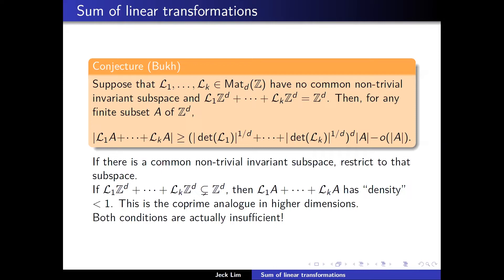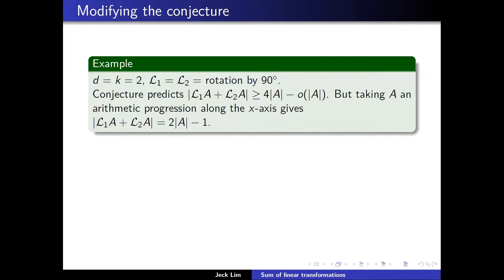It turns out that both conditions are actually insufficient. For the first example, consider L_1 and L_2 to both be rotation by 90 degrees. Each has no non-trivial invariant subspace, and together they have no non-trivial invariant subspace. Also L_1(Z^2) + L_2(Z^2) = Z^2. The conjecture predicts at least 4 times the size of A. But if we take A to be an arithmetic progression along the x-axis, after rotation by 90 degrees they become an AP along the y-axis, and their sum is just twice the length—we only get twice the size of A.